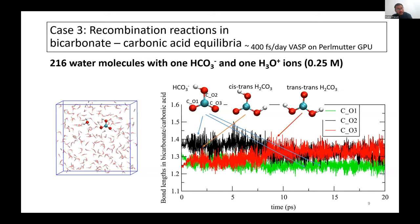Using this setup, we observe different bicarbonate-carbonic acid speciations forming at different times during the simulation. As of now, we have run the simulation for almost 20 picoseconds. For most of the time there is bicarbonate, but then it forms a cis-trans structure of carbonic acid, and for a long period it also forms a trans-trans carbonic acid structure. We are still examining more geometries which lead to the formation of cis-trans and trans-trans carbonic acid.